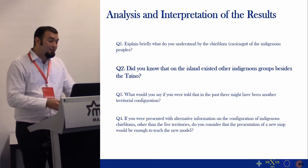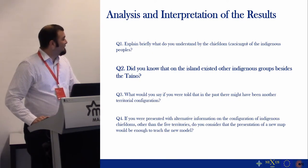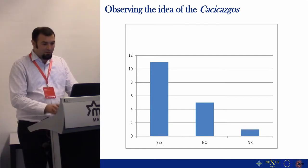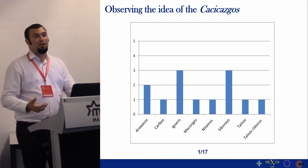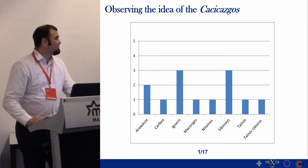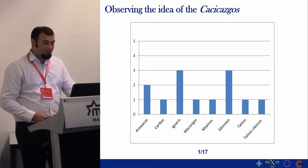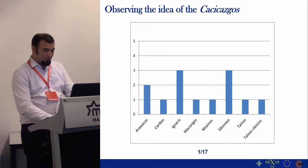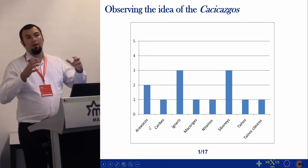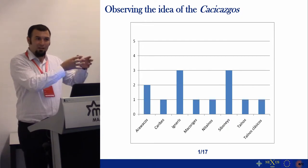Then we asked them: did you know that on the island there existed other indigenous groups besides the Taíno? Most of them said yes, they knew there were other groups besides the Taíno. However, when we asked them to name one or two of those other ethnic groups, only one of the 17 teachers interviewed was able to identify an actual ethnic group — the Macorises — while terms like Arawakos and Caribes are large linguistic groups, not specific ethnic groups.